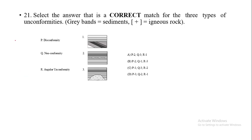The next question is from structural geology. We need to select the correct match for three types of unconformities. The diagram shows gray bands as sediments, and plus signs indicate igneous rock — though this can be quite confusing from the diagram.